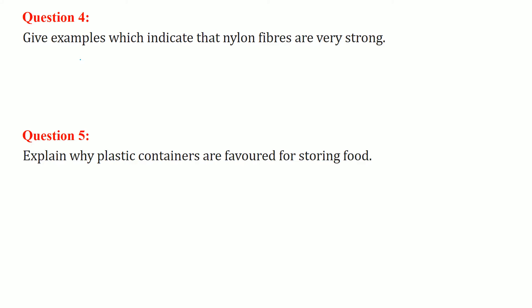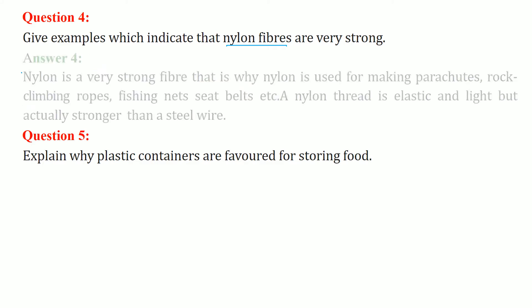Give examples which indicate that nylon fibers are very strong. Nylon fibers are used in various fields, especially where there is a life threat. Nylon is actually stronger than steel wire. That is why nylon is used for making parachutes, rock climbing ropes, fishing nets, and seat belts. This thread is also elastic and light, unlike steel wire.